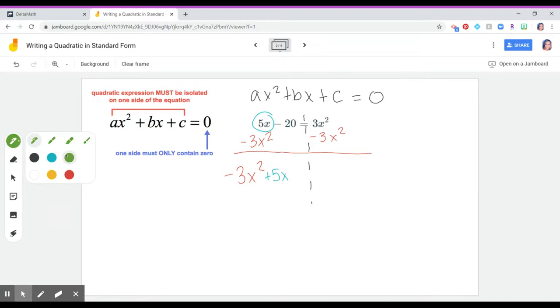We'll use green for c, minus 20. And then we want to keep our equal sign. That's going to be really important when we type this in, equals zero.